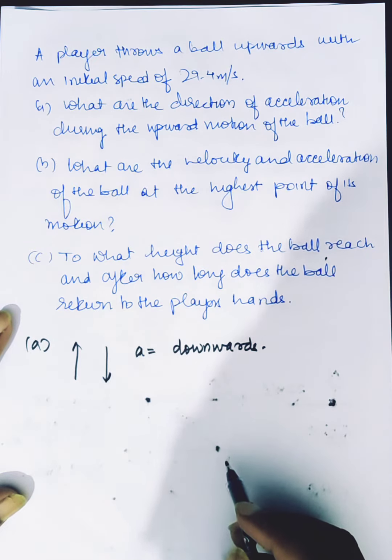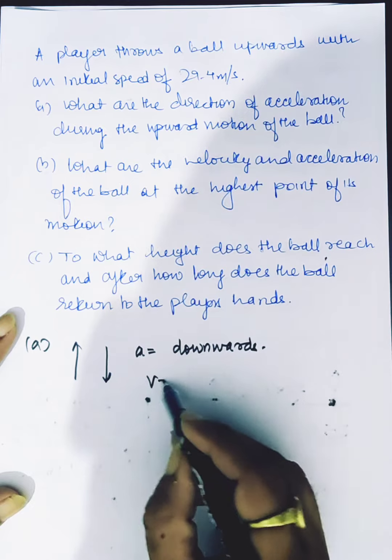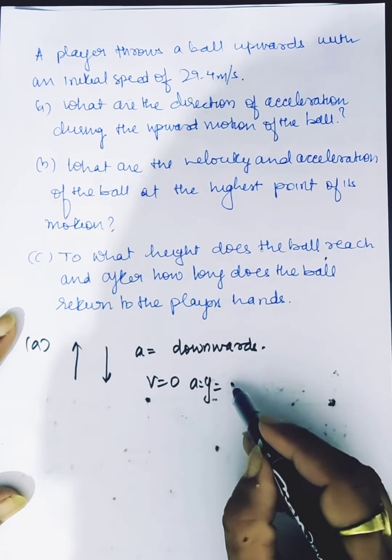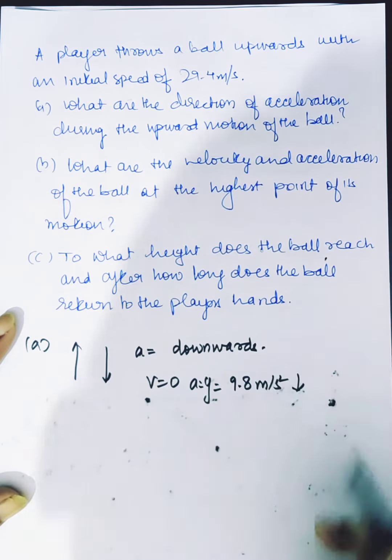Part B: What is the velocity and acceleration of the ball at the highest point of its motion? We know that the velocity at the highest point is 0, but g or acceleration remains the same at 9.8 meter per second square and the direction is downwards.